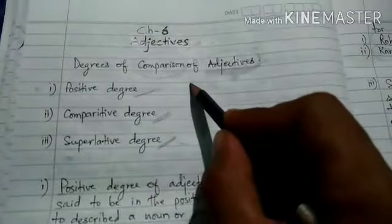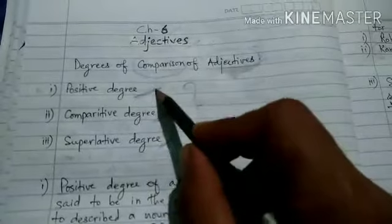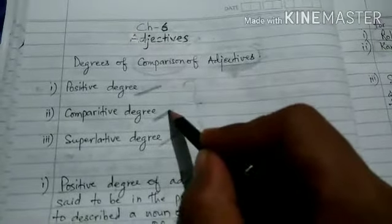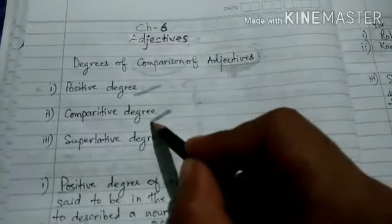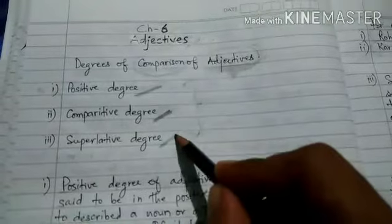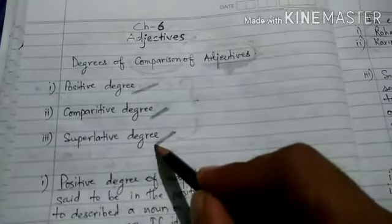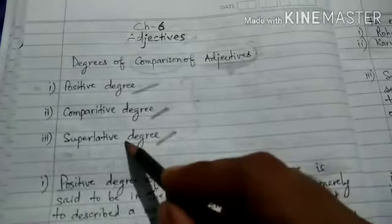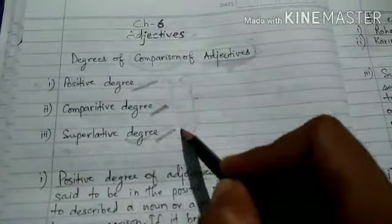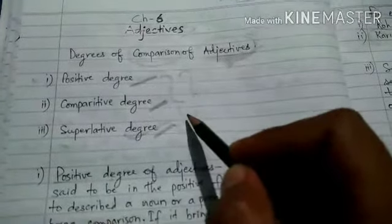That means, in what sense positive degree is used to show the comparison of nouns and pronouns? In what way comparative degree of adjectives is used to bring comparison? In the same manner, how is superlative degree of comparison used to compare nouns? In what situation do we use comparative and superlative degrees of adjectives, and how these three degrees of adjectives are formed? That we will understand with the structure of each adjective word in this video.